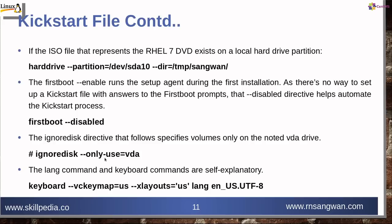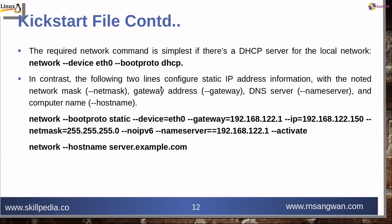Then there are language-specific, keyboard-specific, and character set-specific directives — self-explanatory. The required network command is simplest when there is a DHCP server: network --device=eth0 --bootproto=dhcp. For static IP, two lines configure it with --netmask, --gateway, --nameserver, and --hostname. For example: network --bootproto=static --device=eth0 --gateway=192.168.122.1 --ip=[IP address] --netmask=[netmask] --noipv6 --nameserver=[DNS] --activate, then network --hostname=server.example.com.